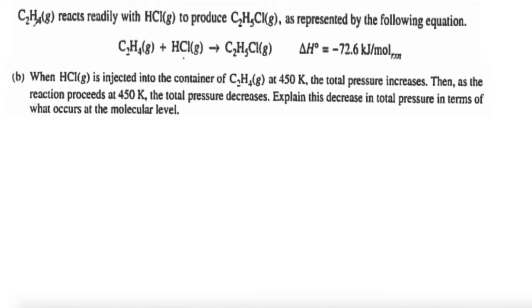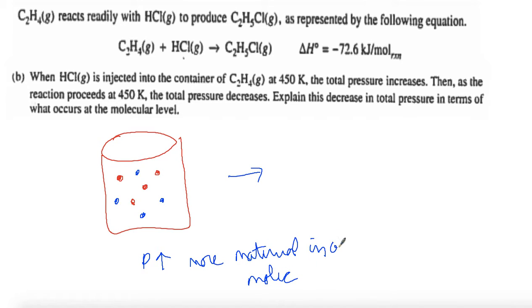In the next question it says when HCl is injected into the container of C2H4 at 450 K, the total pressure increases first. Then, as the reaction proceeds at 450 K, the total pressure decreases. So we have C2H4 in here in our container, and we're going to put in some HCl. When we do that, it's a one-to-one ratio so we're going to have twice as much stuff in here. So our pressure will increase - more material or molecules in container.